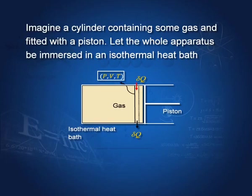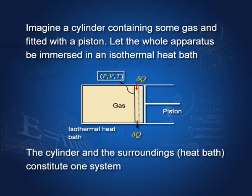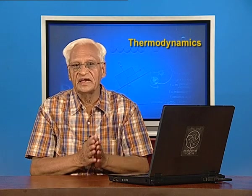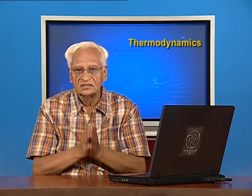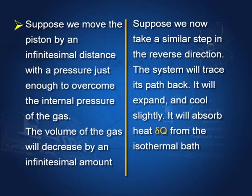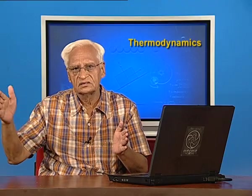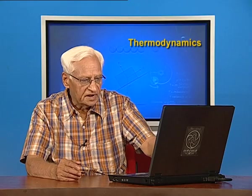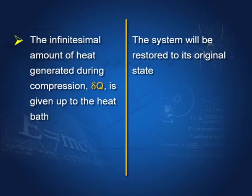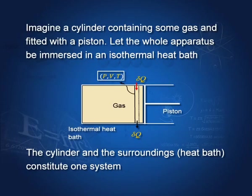Imagine a cylinder containing some gas fitted with a piston. Let the whole apparatus be immersed in an isothermal heat bath. The outside is the isothermal heat bath, and inside is the gas with a piston that can compress or allow the gas to expand. The cylinder and its surroundings constitute one system. Suppose we move the piston by an infinitesimal amount with pressure just enough to overcome the internal pressure — the gas varies slightly, the volume decreases by an infinitesimal amount, and the infinitesimal heat generated during compression is given up to the heat bath.